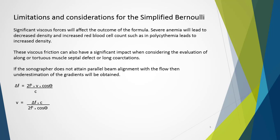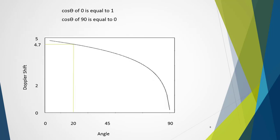If the sonographer does not attain parallel beam alignment with the flow, underestimation of gradients will result. Consider the Doppler equation — cos theta plays a part in what we're measuring. However, in cardiac ultrasound, we don't apply cos theta; we always assume parallel alignment.